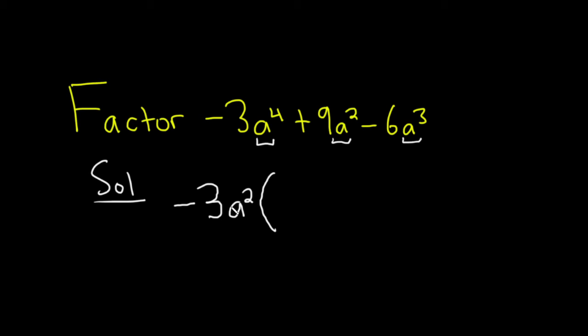So what do we multiply by this in order to get this? Well here we have a squared, and here we have a to the fourth. So we just need an a squared.